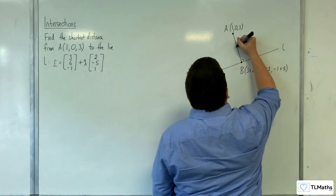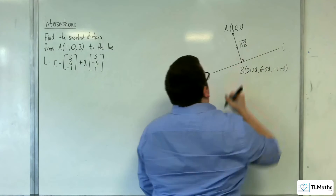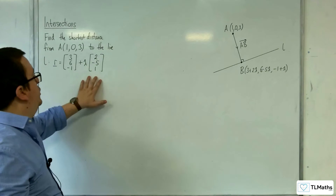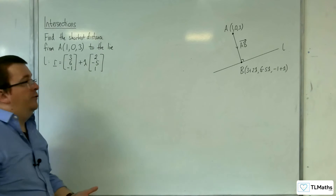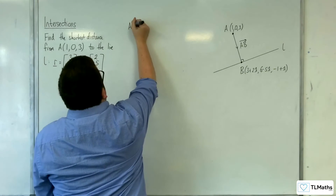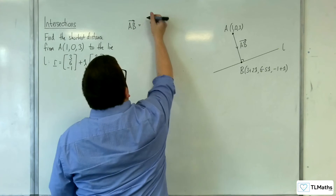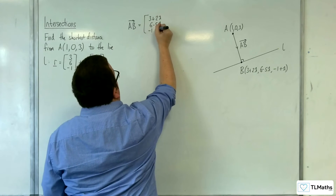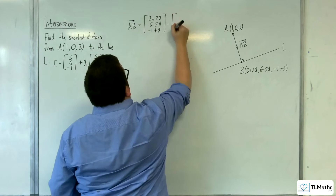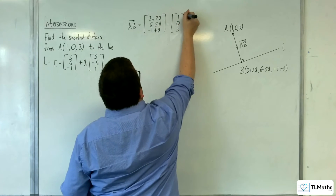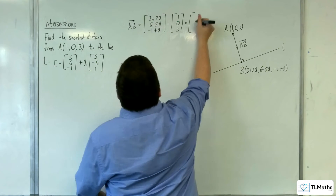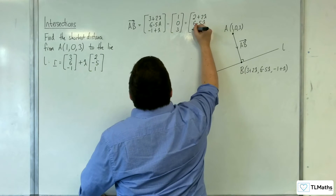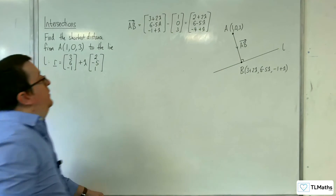So I could work out the vector AB, and of course because AB is at right angles to the line L, when I do AB dotted with the direction vector I will get 0, and that will set up solving the equation. So I need to work out the vector AB, which is OB minus OA: (3+2λ, 6-5λ, -1+λ) take away (1, 0, 3). So we get (2+2λ, 6-5λ, -4+λ). That's AB.